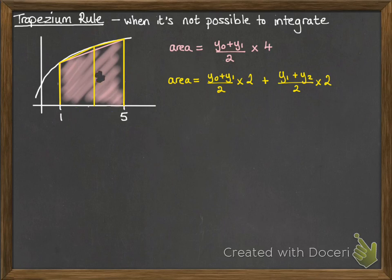And we can go further than that. If we split it into even more trapezia, then we find the area of each one and we add them all together.